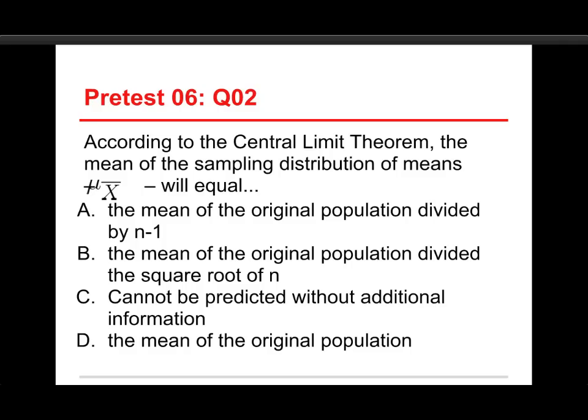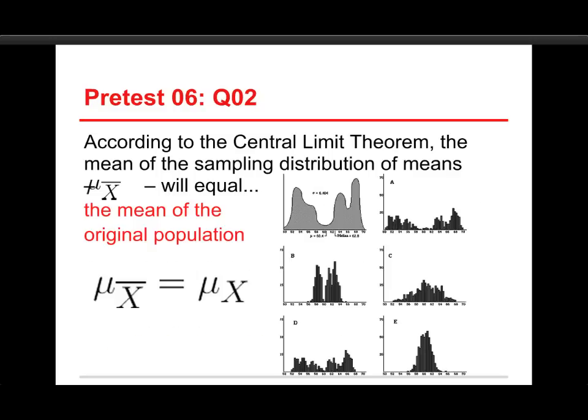Number two: according to the central limit theorem, the mean of the sampling distribution of means — that should have a mu sub x-bar — will equal the mean of the original population divided by n minus 1; or the mean of the original population divided by the square root of n; or cannot be predicted without additional information; or the mean of the original population. The answer is the mean of the sampling distribution of means is equal to the mean of the original population of raw scores that it came from.